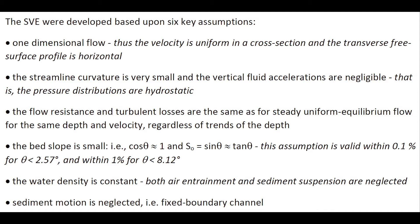The Saint-Venant equations were developed based upon six key assumptions. First, one-dimensional flow: the flow is uniform in a cross-section and the transverse surface profile is horizontal. Second, the streamline curvature is very small and the vertical fluid accelerations are negligible. Third, the pressures are hydrostatic. Fourth, the flow resistance and turbulent losses are the same as in steady, uniform equilibrium flow for the same depth and velocity, irrespective of the trend of the depth.